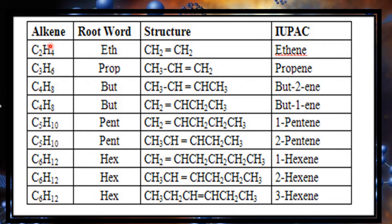The next homologous series is alkenes. The general formula is CnH2n. The first member is C2H4, which is ethene — the root 'eth' because there are two carbons, and the suffix '-ene' because it belongs to the alkene homologous series. The second member is propene.